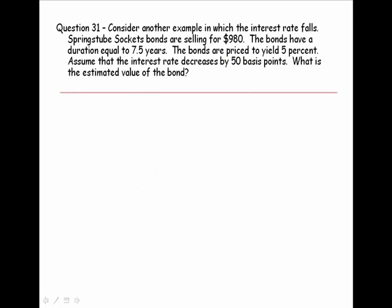Let's consider another example, this time in which the interest rate falls. Spring Stube Sockets bonds are selling for $980. The bonds have a duration equal to 7.5 years. The bonds are priced to yield 5%. Assume that the interest rate decreases by 50 basis points. What is the estimated value of the bond?